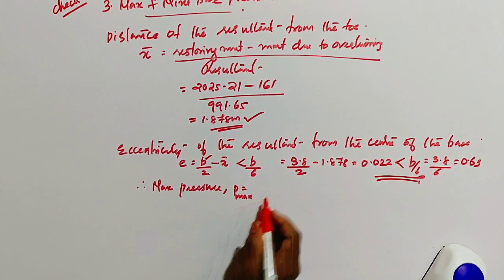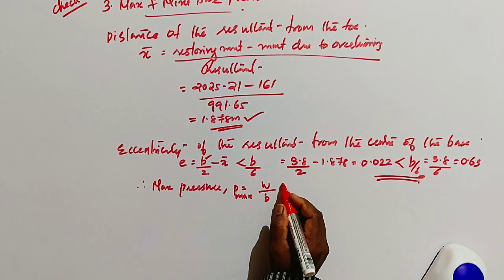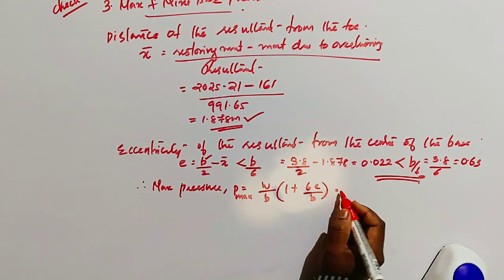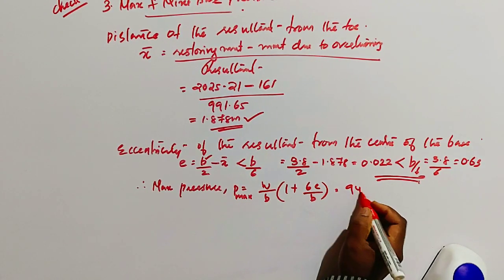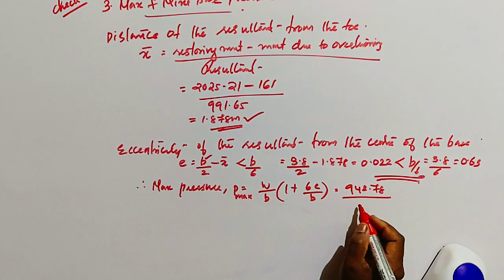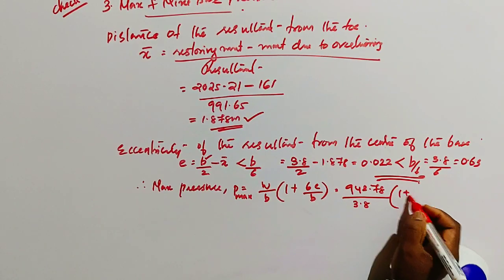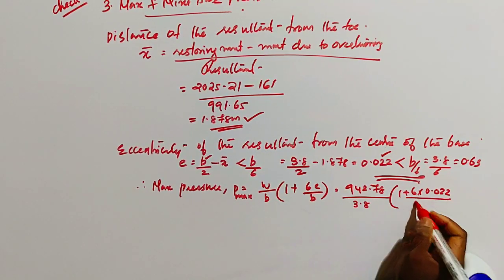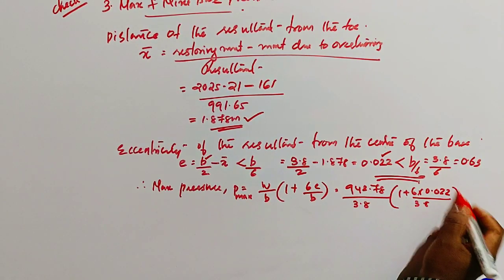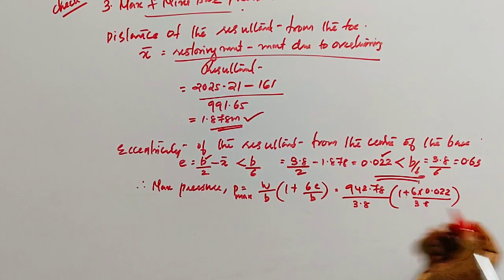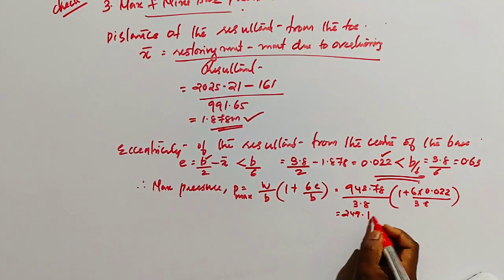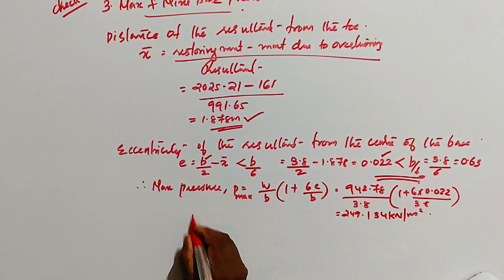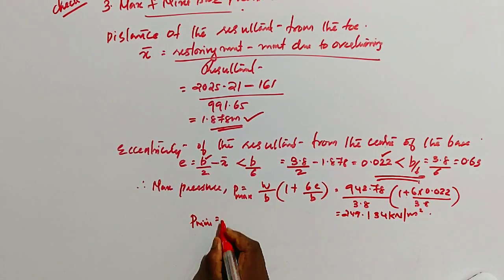Then maximum pressure P max, it is W by B into 1 plus 6 into E divided by B. W is 942.78 divided by base width, it is 3.8 for an abutment, 1 plus 6 into E, it is 0.022 divided by 3.8. And it is 249.134 kilonewton per meter square.